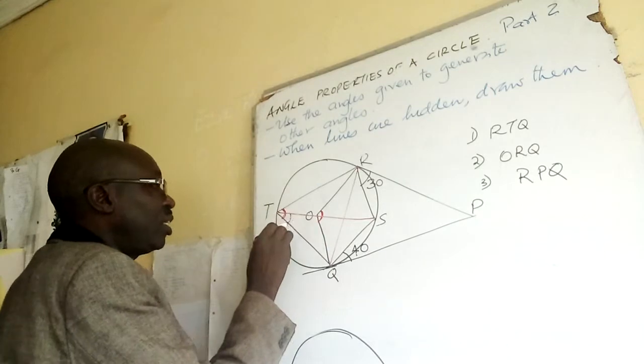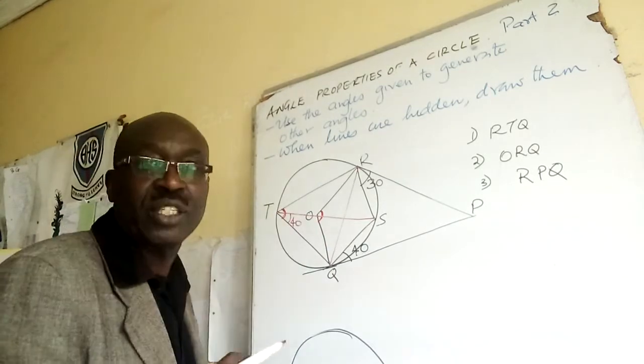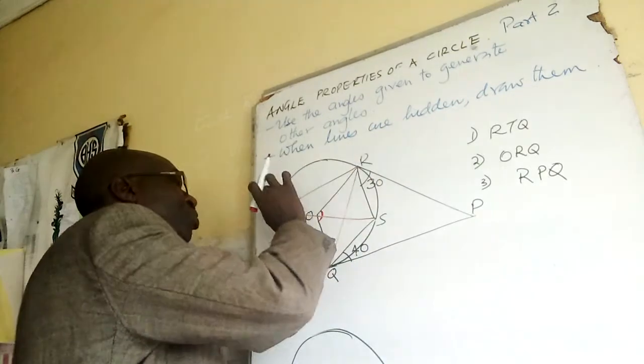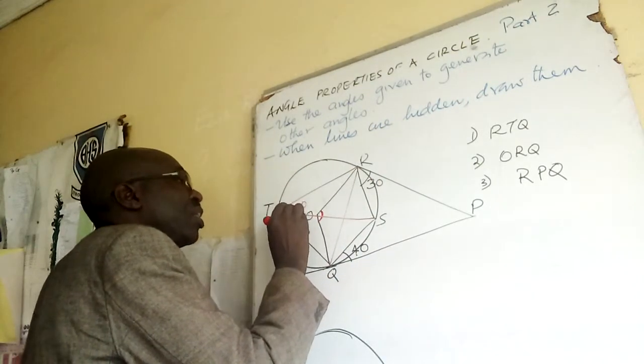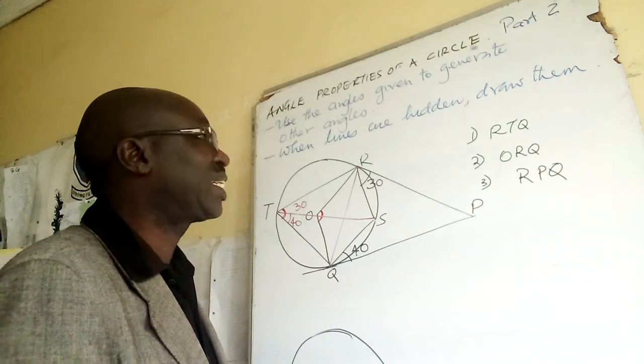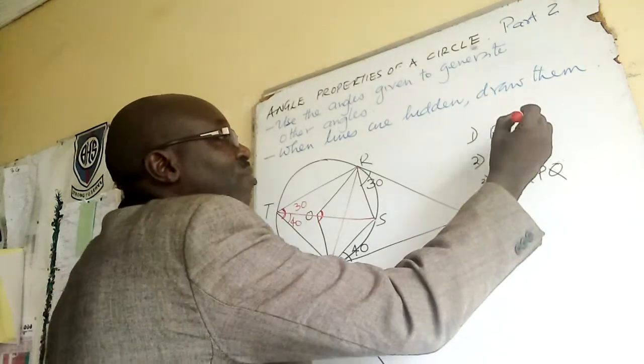So if this is 40, then this is also 40. If this is 30 up to here, it also makes 30. So if I asked you angle RTQ, you would have it automatically.